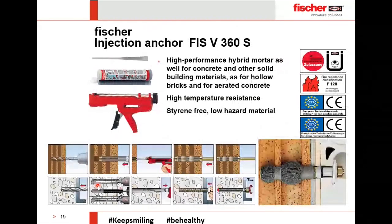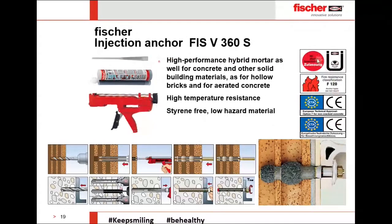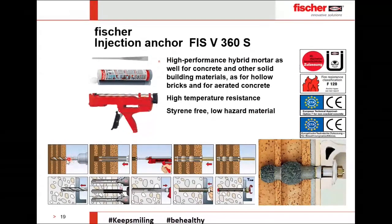For hollow blocks, the most efficient anchor is the chemical anchor. It has a high-performance hybrid mortar suitable for concrete, solid block, hollow block, and aerated concrete. It has German approval and Option 1 and Option 7 approvals. For installation: make a hole with a drill machine, insert the sleeve, inject chemical into the sleeve, then insert and tighten the threaded rod.